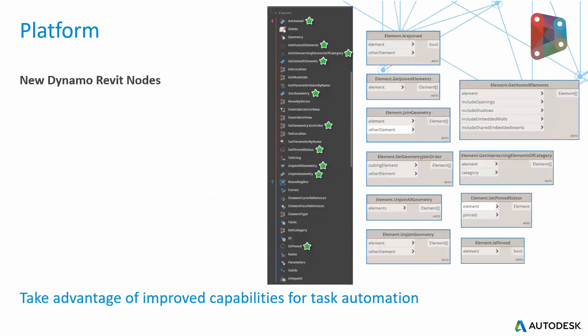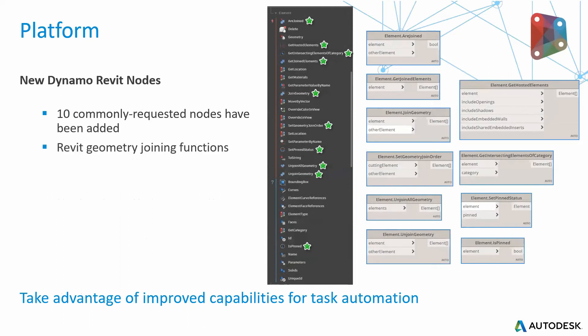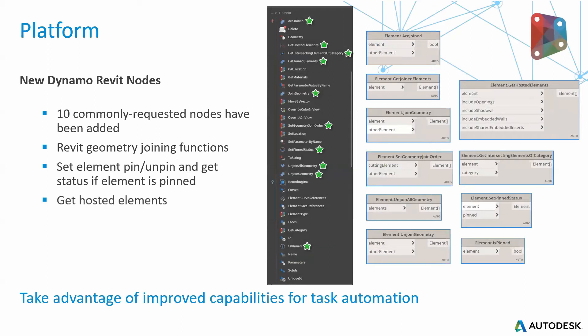There are also new Dynamo Revit nodes — 10 commonly requested nodes have finally been added. These include Join, Join Geometry, and Is Pinned. We have Revit geometry joining functionality, the ability to set elements to pin or unpin, and get statuses of elements. You can also now get hosted elements with your Dynamo Revit nodes.